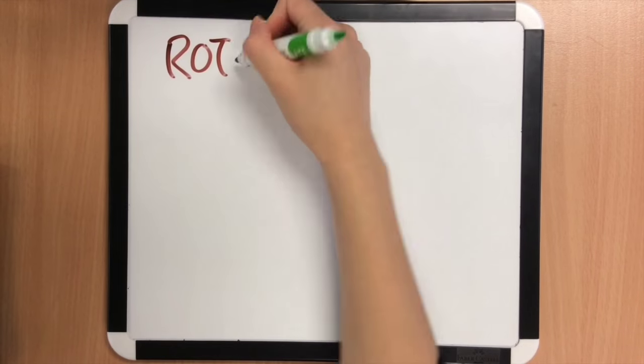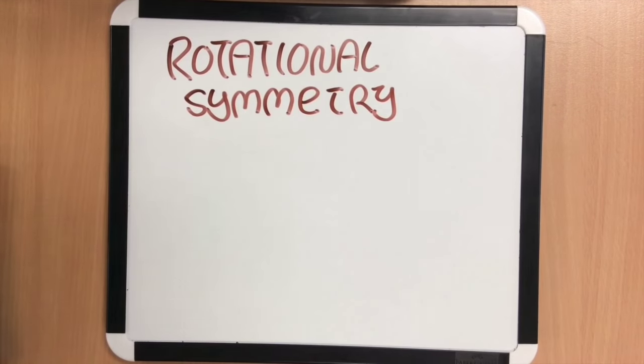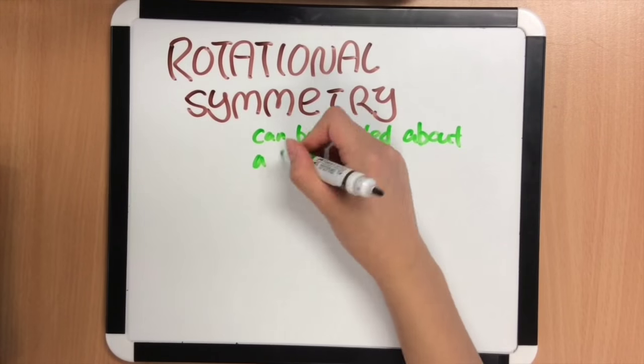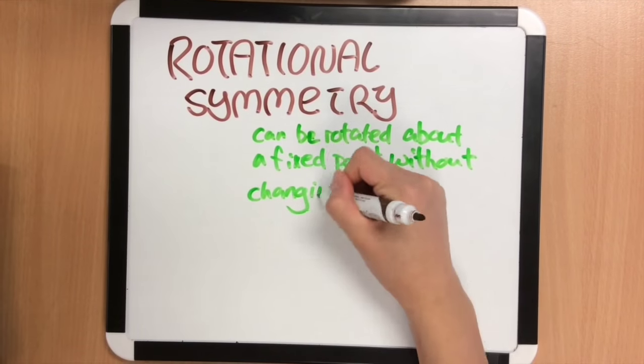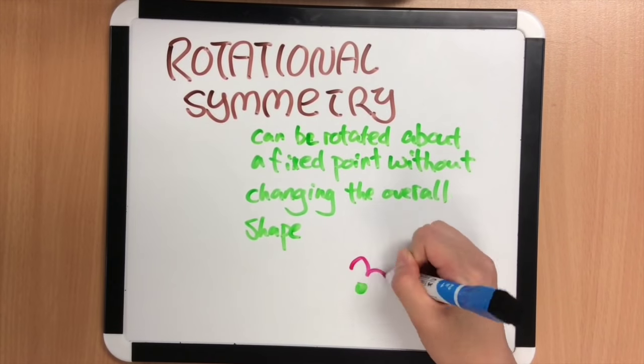And finally, rotational symmetry. When an object has rotational symmetry, it can be rotated about a fixed point without changing the overall shape.